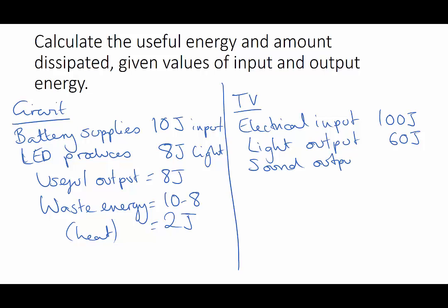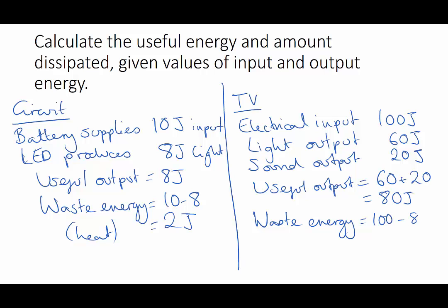To work out the total useful output of our TV we need to add together the light output and the sound output, so 20 plus 60, and that gives us a total of 80 joules. Then to work out the waste energy we take our input energy and subtract the useful output, so we need to do 100 minus 80, which gives us 20 joules. And again that waste energy is mostly going to be heat or thermal energy.